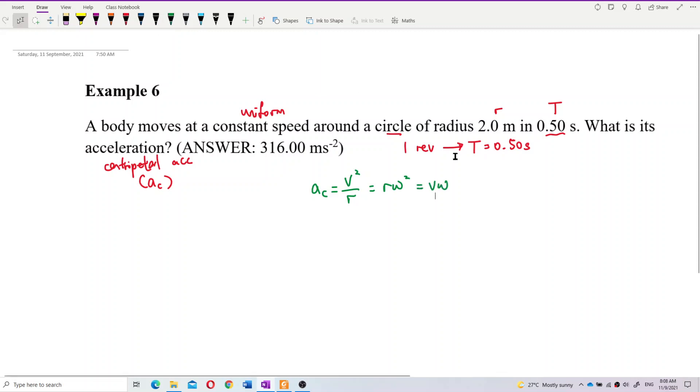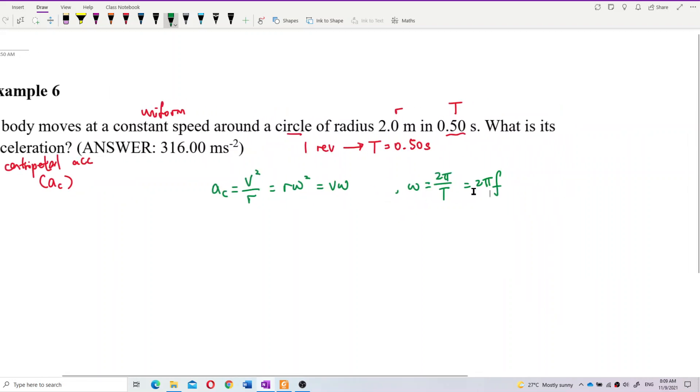Now we already have the R, but we don't have the omega. Never mind. Because we also know omega is 2 pi over period or 2 pi F if we have frequency. So we can find omega. We can find omega first.